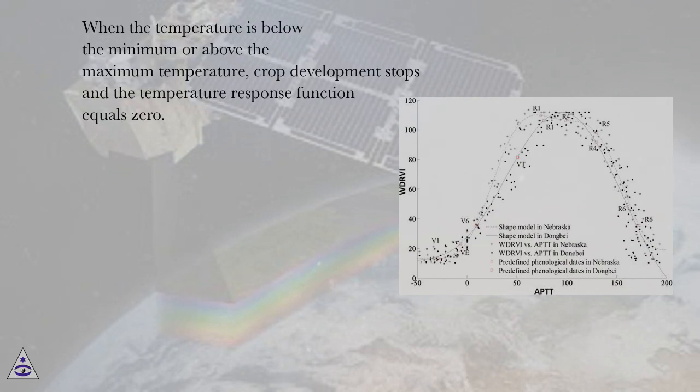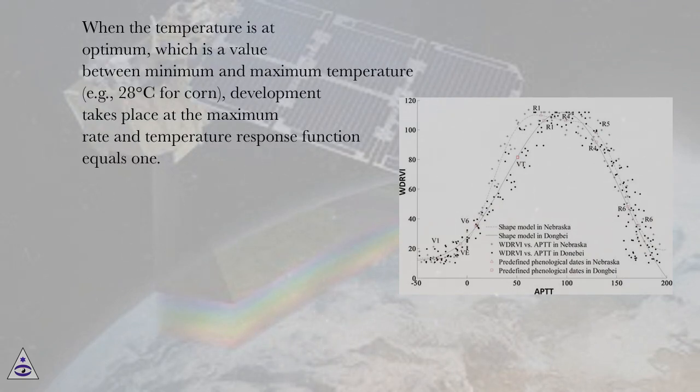When the temperature is below the minimum or above the maximum temperature, crop development stops and the temperature response function equals 0. When the temperature is at optimum, which is a value between minimum and maximum temperature, for example, 28 degrees Celsius for corn, development takes place at the maximum rate and temperature response function equals 1.